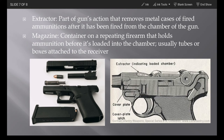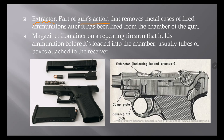Next comes the extractor. The extractor is the part of the gun's action that removes the metal cases of fired ammunition. Ammunition is enclosed in a metal case which contains the projectile, the propellant, and the primer. Once the projectile has been fired, the metal case is left behind in the gun and needs to be removed to insert the next ammunition. The extractor is the portion that helps in removing that leftover metal case.